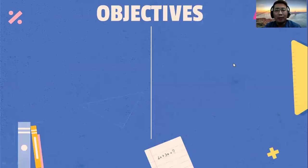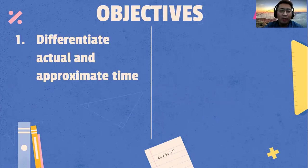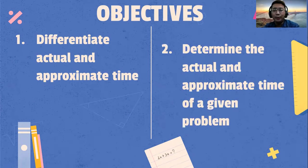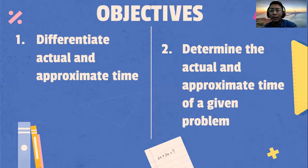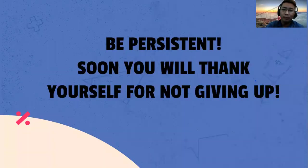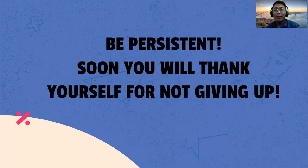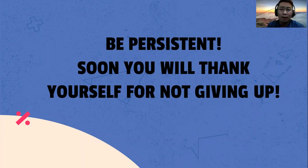What are the objectives of this lesson? Number one, differentiate actual and approximate time. Number two, determine the actual and approximate time of a given problem. Always remember: be persistent. Soon you will thank yourself for not giving up.